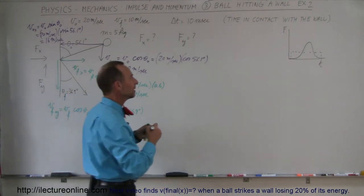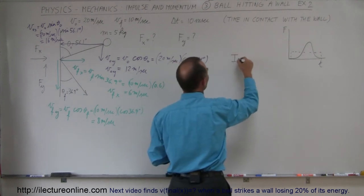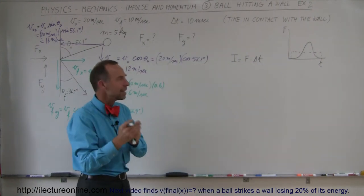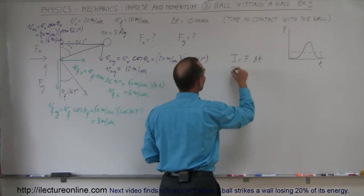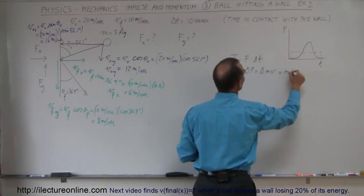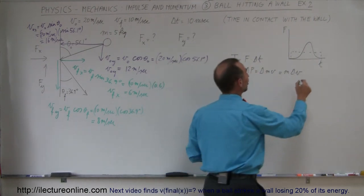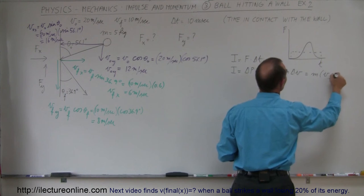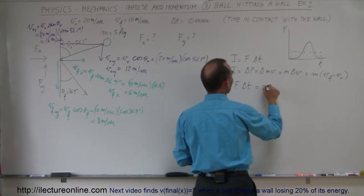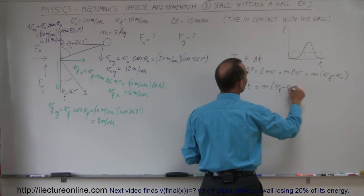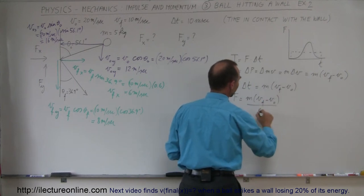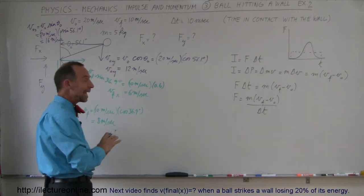Now we define the impulse in two ways. Impulse can be defined as the force times the time of the collision — how long the two objects stay in contact, that's delta t. We can also say impulse equals the change in momentum, which equals mass times the change in velocity, which equals mass times (v final minus v initial). Setting these equal: force times delta t equals mass times (v final minus v initial), so force equals mass times (v final minus v initial) divided by delta t. We can apply that to both the x and y directions.